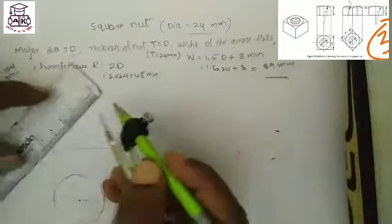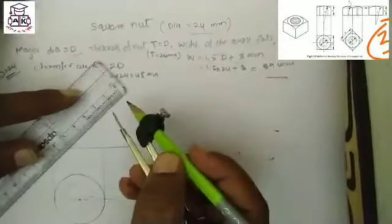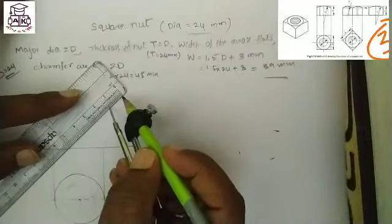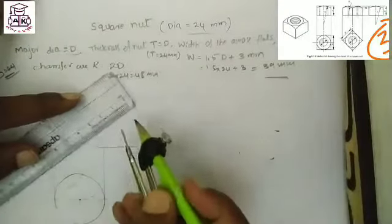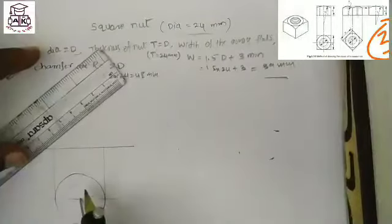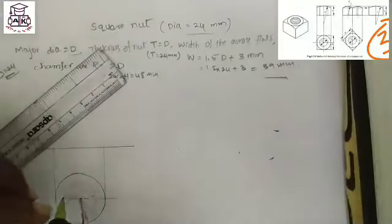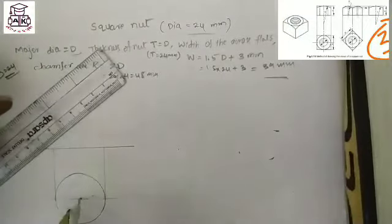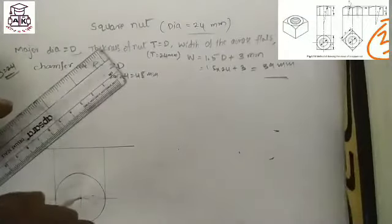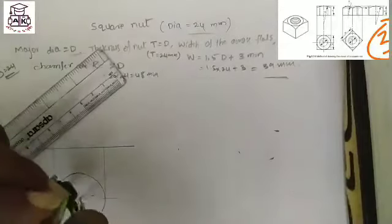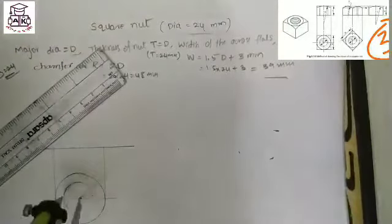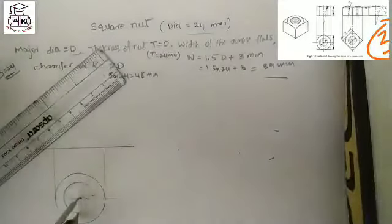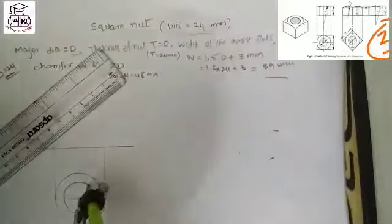After completing this circle, extend the edge corners. Then draw another circle inside the first circle. The diameter of this inner circle is 24 mm, so take 12 mm radius and complete the circle inside.